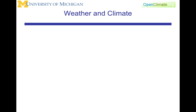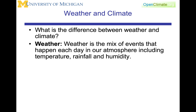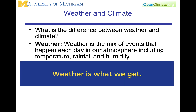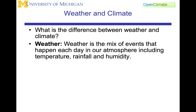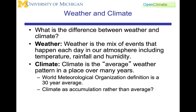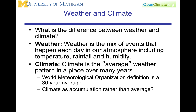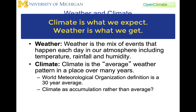What is the difference between weather and climate? Weather is the mix of events that happen each day in our atmosphere, including temperature, rainfall, and humidity — what we get, what actually happens. Climate, on the other hand, is often defined as average weather. The World Meteorological Organization definition has traditionally been a 30-year average of weather. Some people say climate is what we expect, weather is what we get.